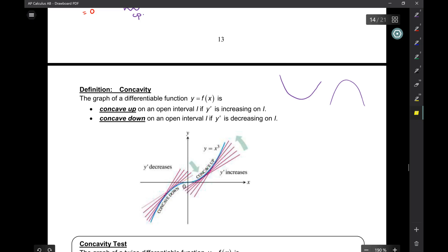So, the way we can decide or determine concavity is this. We say a graph is concave up if y prime is increasing. So, not y anymore, but y prime. And we say it's concave down if y prime is decreasing.